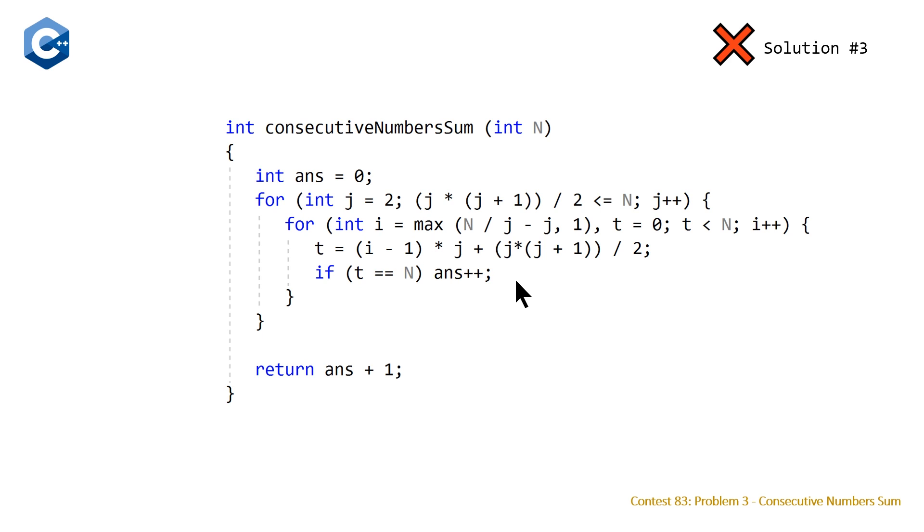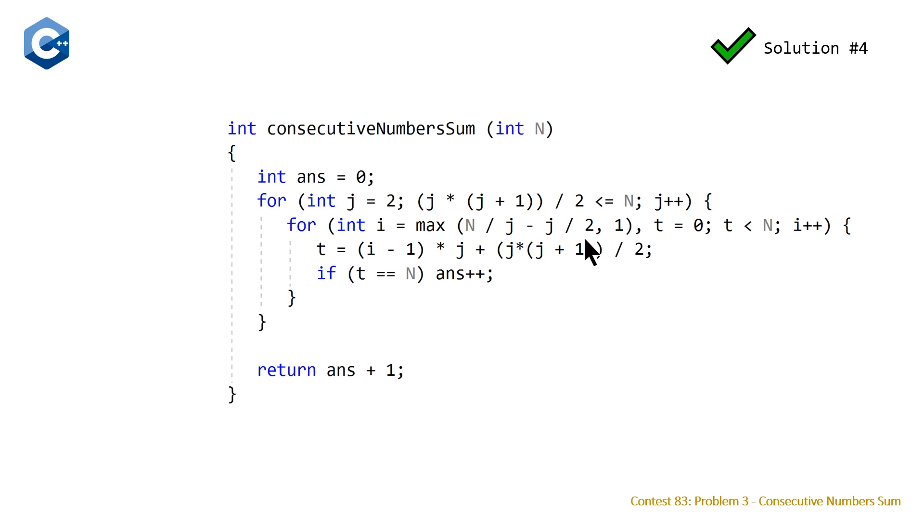However, it still times out. So my third improvement to the solution was realizing that I should have never been subtracting J, because then you end up with a range that is going to be 2 times J. What you want is to subtract J divided by 2, and once you do this you end up with a passing solution. Probably not the optimal way to solve this problem, but it does get you to the correct algorithm at the end of the day.